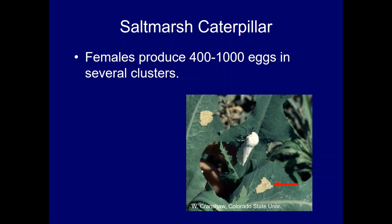Females can produce large clusters of eggs, and the photograph shows a couple of such clusters with a female adult indicated by a red arrow. From these egg clusters, a number of larvae will hatch and move about to find food.